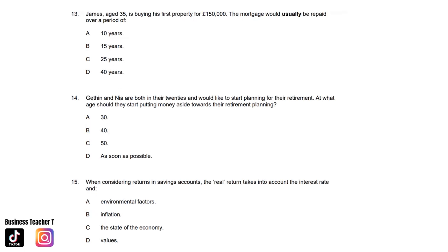Question thirteen: James, aged 35, is buying his first property for £150,000. The mortgage would usually be repaid over a period of: A. 10 years. B. 15 years. C. 25 years. Or D. 40 years. And the answer is C. 25 years.